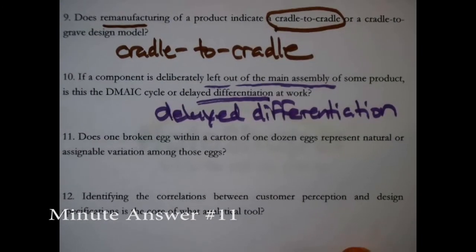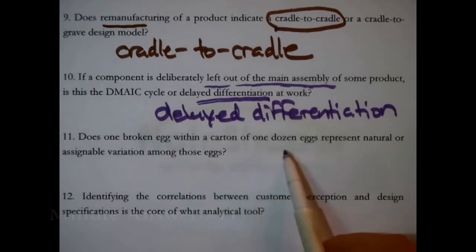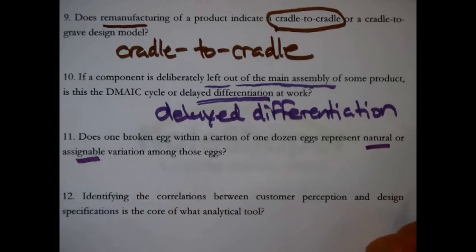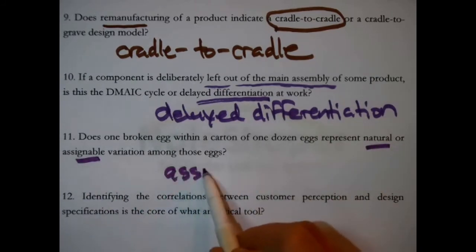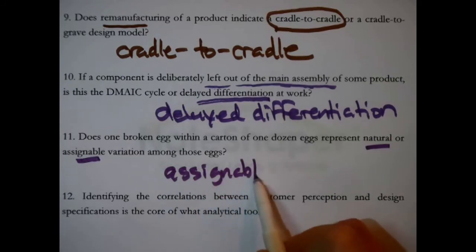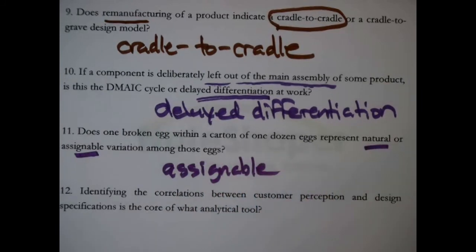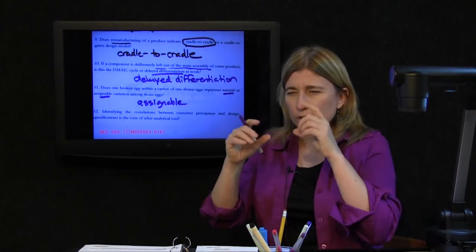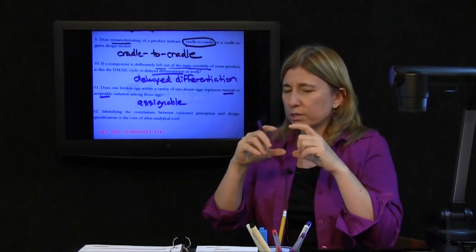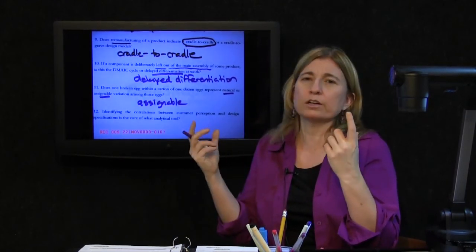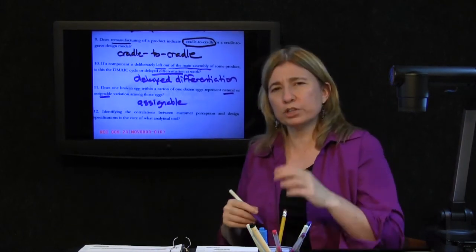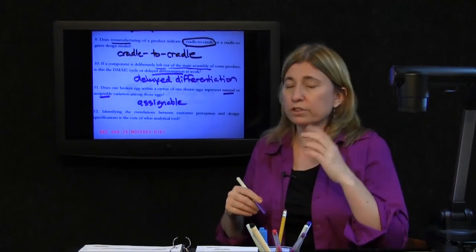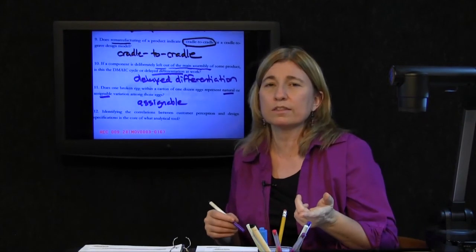Does one broken egg within a carton of one dozen eggs represent natural or assignable variation among the eggs? Answer, assignable variation. Natural variation is variation that we expect in a process, like eggs, if you look at them closely enough in the carton, are going to be just slightly different sizes. That's only natural. Assignable variation is some variation, some difference, that there's a distinct reason that that happened.